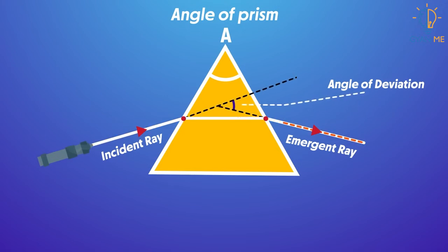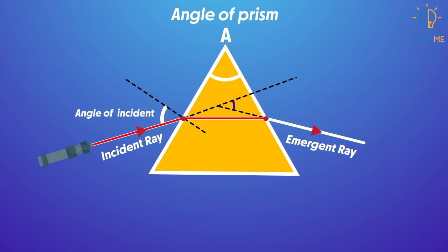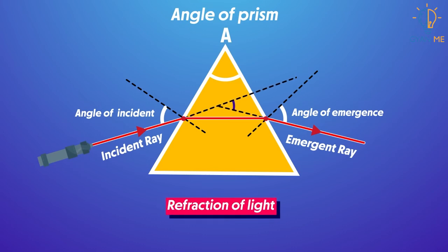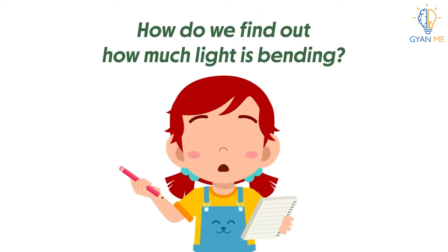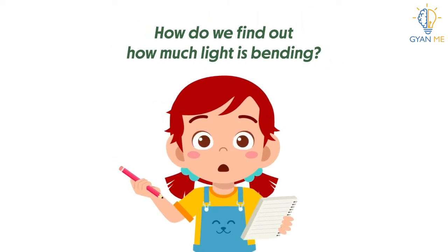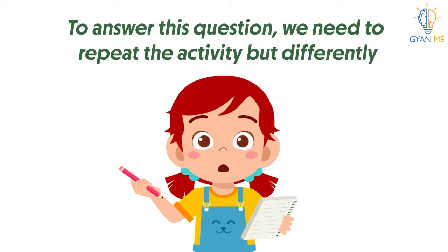We saw that when a laser beam is made to fall on the surface at an angle, it bends inside the prism and when it comes out, it once again bends at the second interface. This is called refraction of light through prism. But we asked you how do we find out how much light is bending? To answer this question, we need to repeat the activity but in a slightly different way.